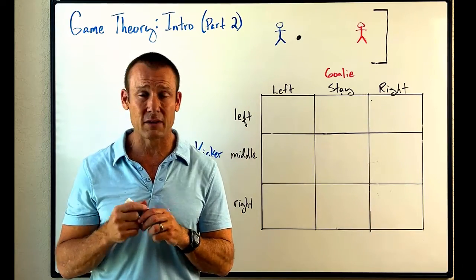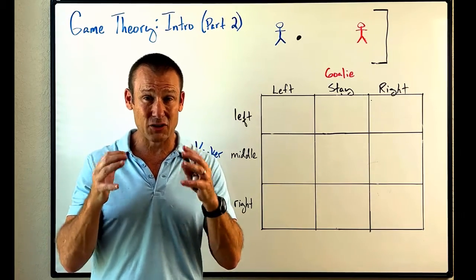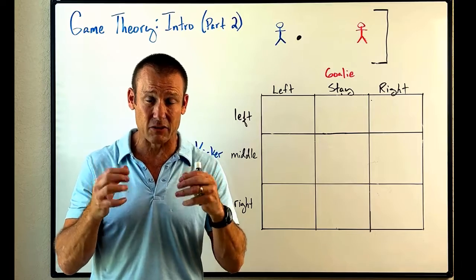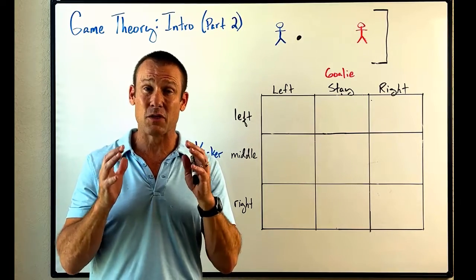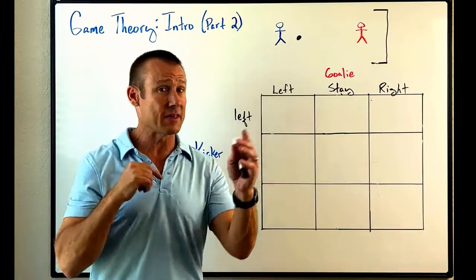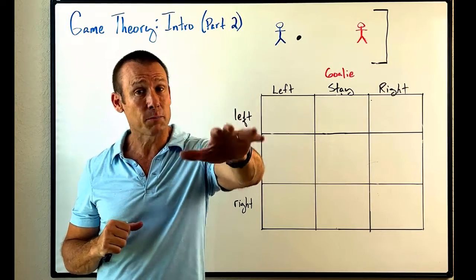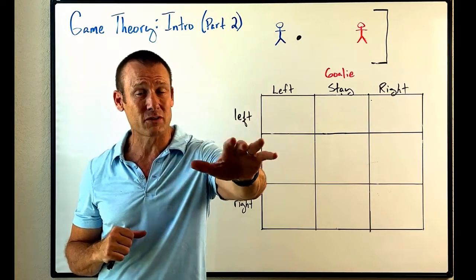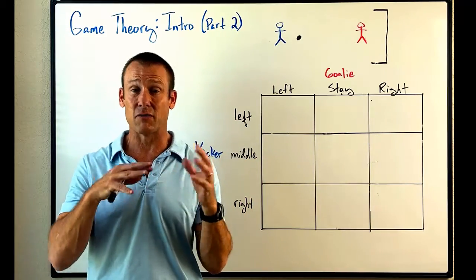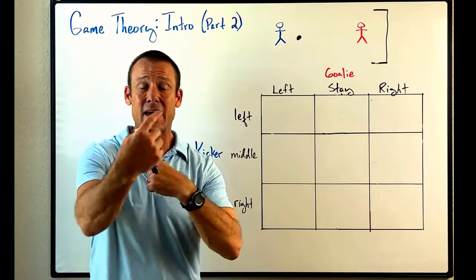What's an interdependent situation? It's a situation where the outcomes of one player are not just based on their own decisions and strategies, but also based on the decisions and strategies of others. And the opposite is true: the payoffs of others are not just based on their own decisions and strategies, but also the decisions and strategies of other players in the game — that's where interdependencies exist.